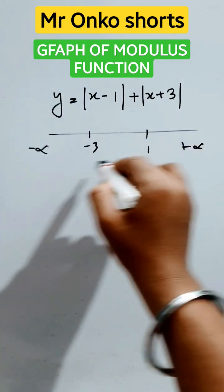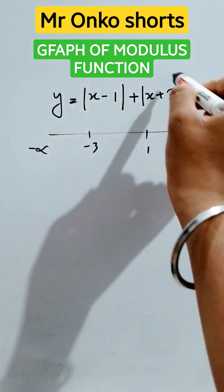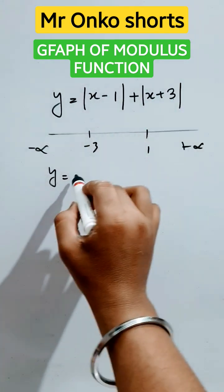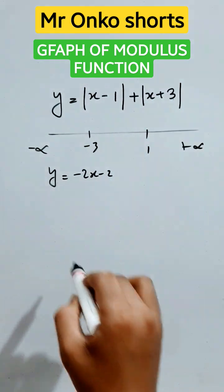From minus infinity to plus infinity. In this region, this will be negative, this will be negative. So y will be equals to minus of this and minus of this. It will be ultimately minus 2 minus 2x.